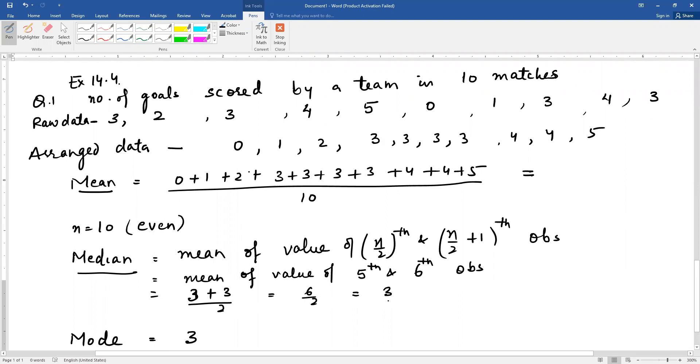Then mode is the most frequent observation. Now you can find out from the data immediately. By arranging the data it becomes even more prominently visible. This 3 is coming 4 times, that is it is coming the most number of times. So mode is the most frequent observation, that is 3.